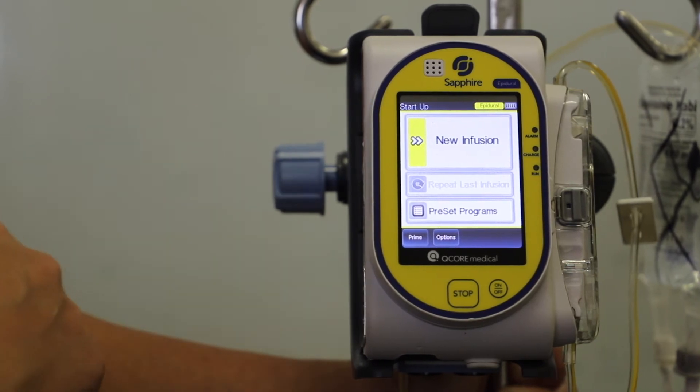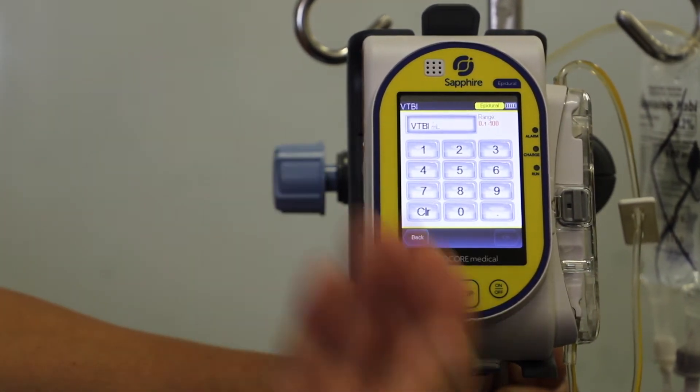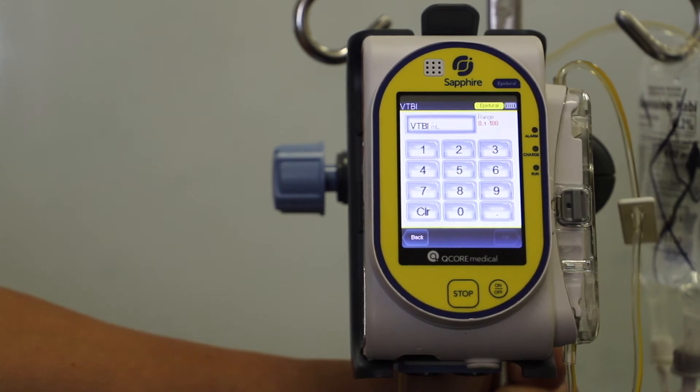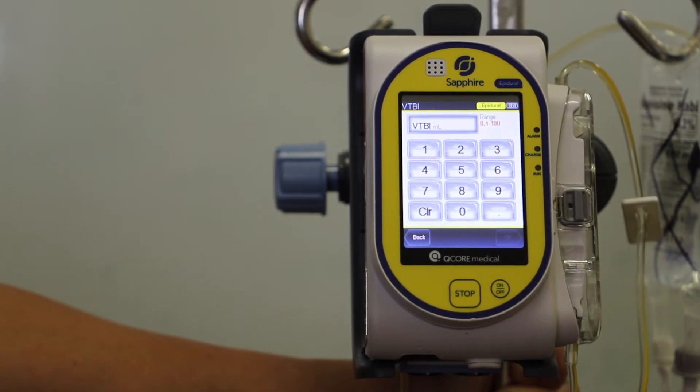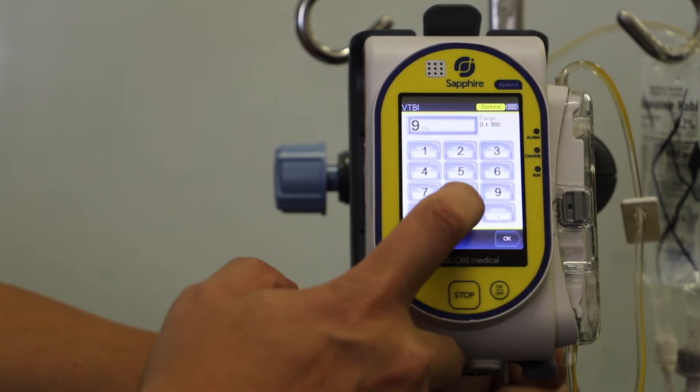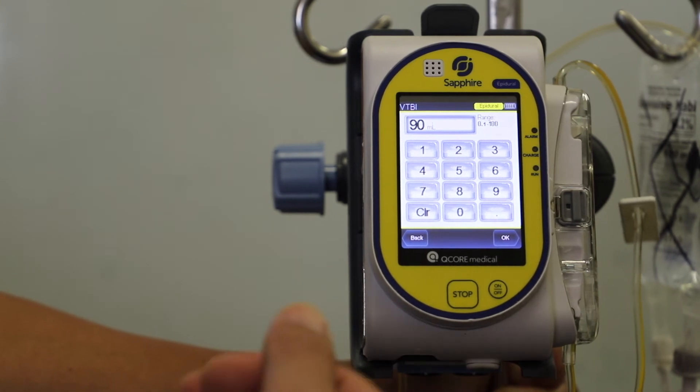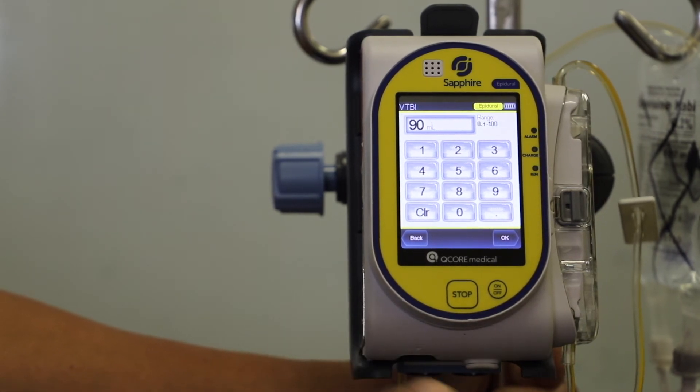We go to new infusion, a volume to be infused. So if you have a bag that has been primed, you would select 90. Otherwise, if it's an additional bag, you would choose 100.